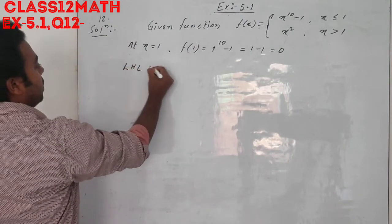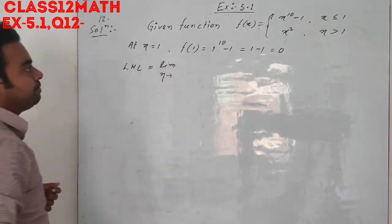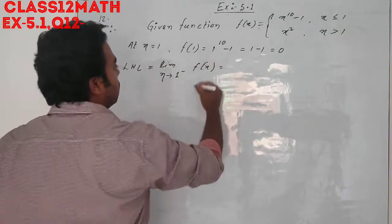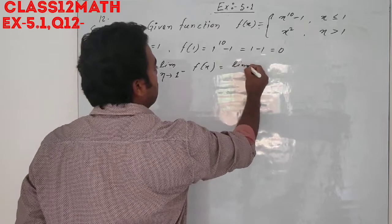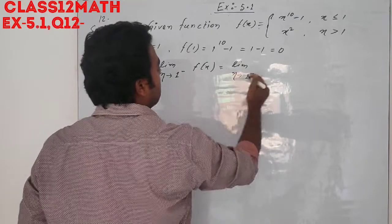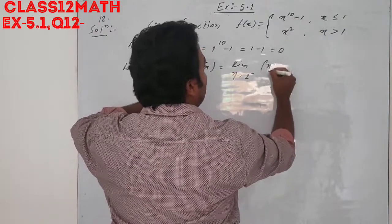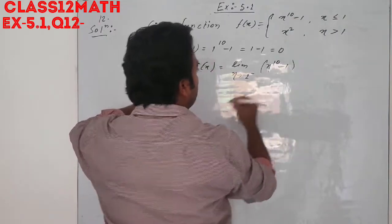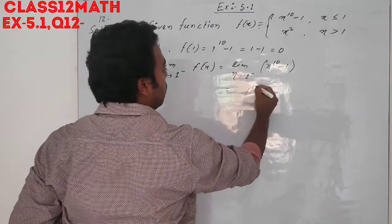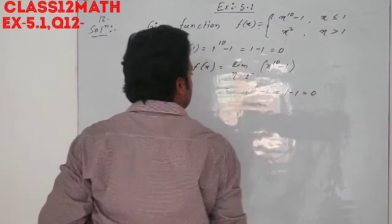Left-hand limit: limit x tends to 1 minus f(x) equals limit x tends to 1 minus f(x). f(x) will be x to the power 10 minus 1. Put 1 here, we get 1 to the power 10 minus 1, equal to 1 minus 1, equal to 0.